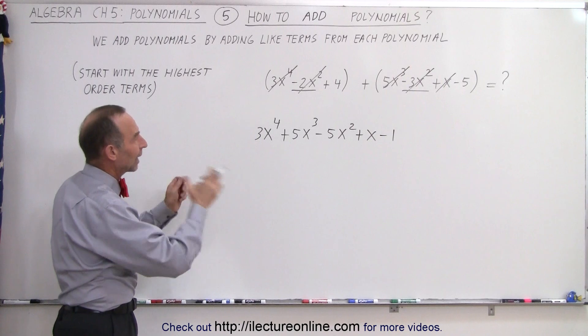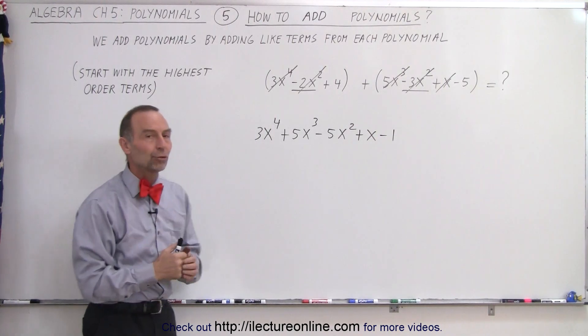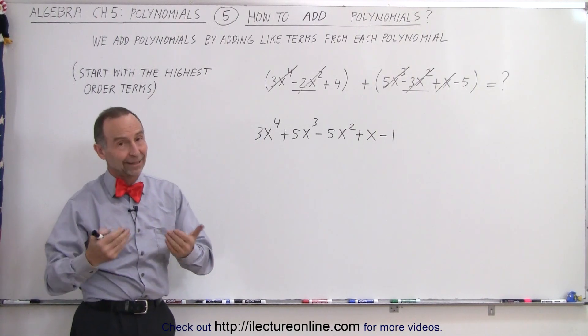Simply, by adding like terms together, we end up with the sum of the two polynomials. And that is how it's done.